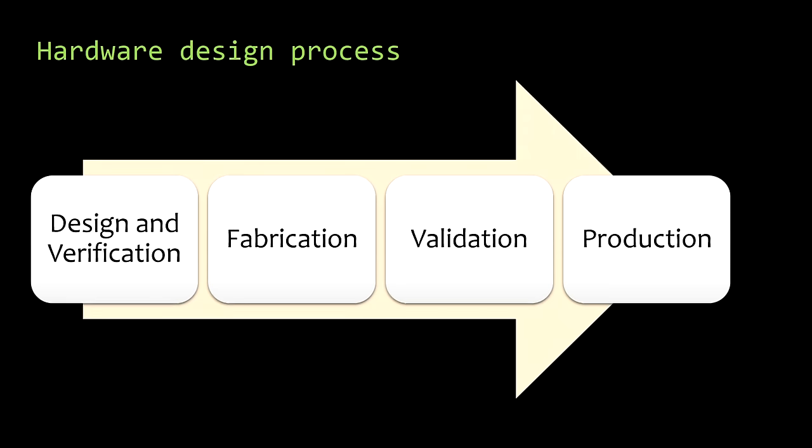CPU development starts with design and verification, where teams write the Verilog or VHDL code and do a bunch of testing in a simulation environment. That can take anywhere from one to about four years, depending on how much is changing in the design. Once completed, it's sent to a fabrication facility — it takes at least two to three months to get any silicon back. After that, you still need to test it, and that validation process can easily take up to a year or more. So it can be four or five years from concept to mass production.